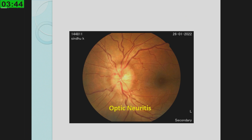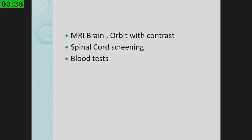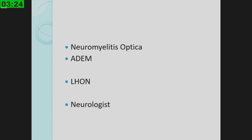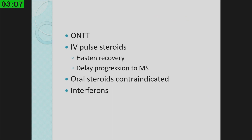Till recent years we used to send only for MRI brain with orbits to rule out multiple sclerosis — not anymore. When you send for MRI brain with orbits, also send for spinal cord screening and specifically request blood tests for aquaporin-4 and MOG antibodies, because not all optic neuritis is MS. Especially in our Asian population, think of neuromyelitis optica, ADEM, MOG optic neuritis, and in atypical age groups, LHON should always flash through your mind. Always loop in a neurologist. Treatment follows the ONTT protocol — IV pulse steroids; oral steroids are contraindicated.